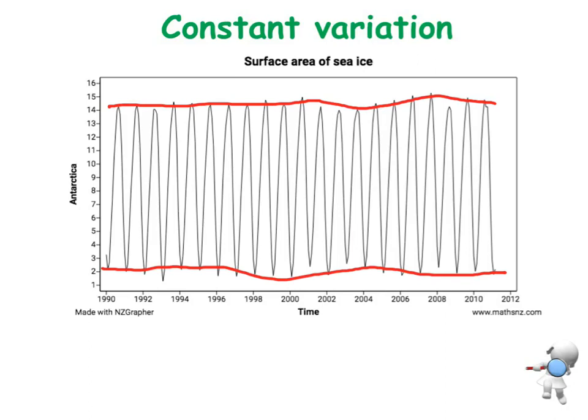And what I hope that you notice is that those two lines are reasonably parallel. Now that tells me that the variation, how variable the data is at the beginning, is about a similar width of variation at the end. And it's about the same as in the middle.